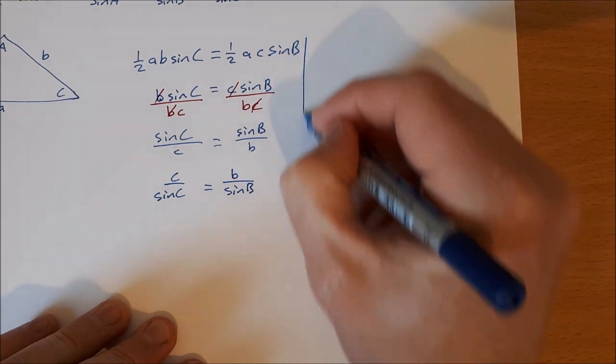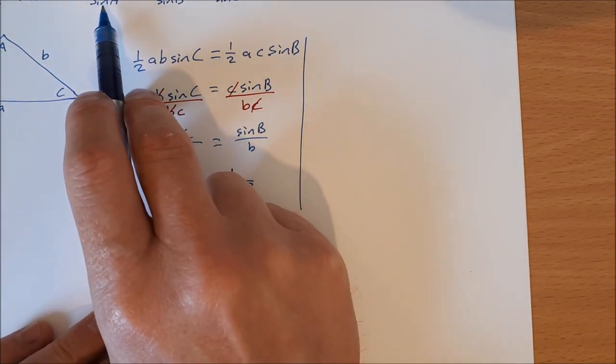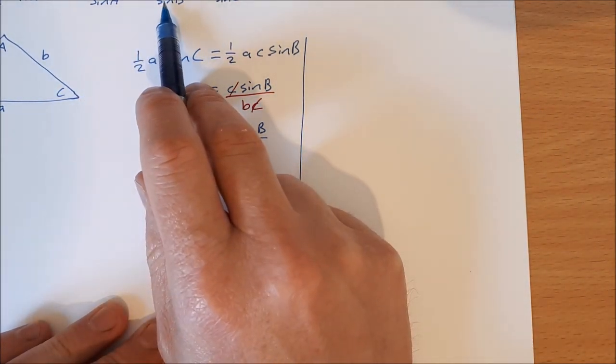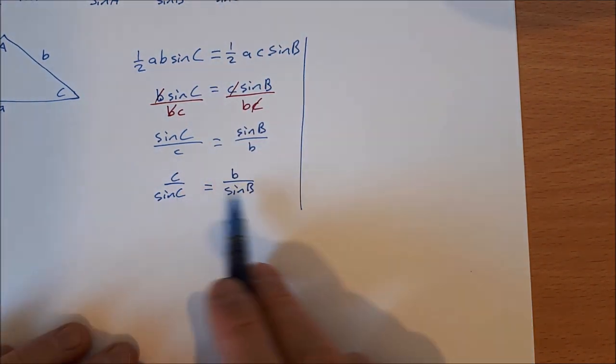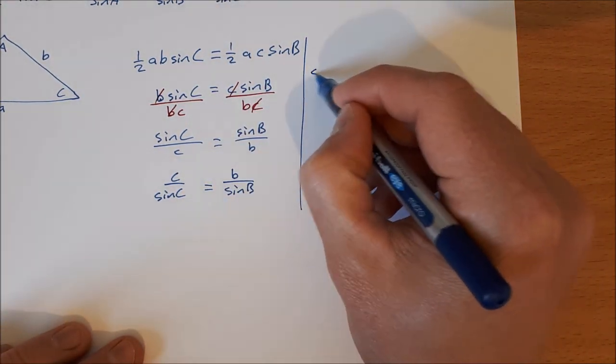So I don't need to do it again. In the sine rule formula, it's a over sine A is b over sine B is equal to c over sine C. We only have c and b at the moment. We can just say similarly.